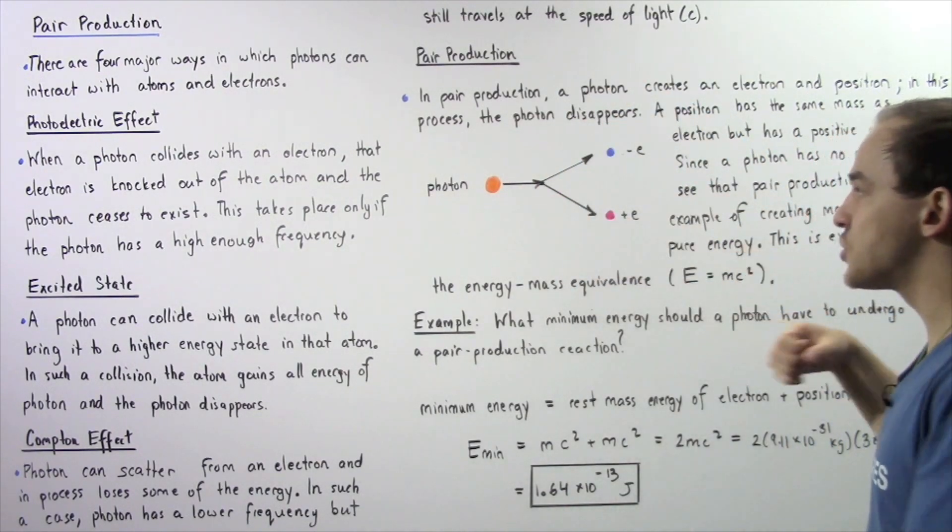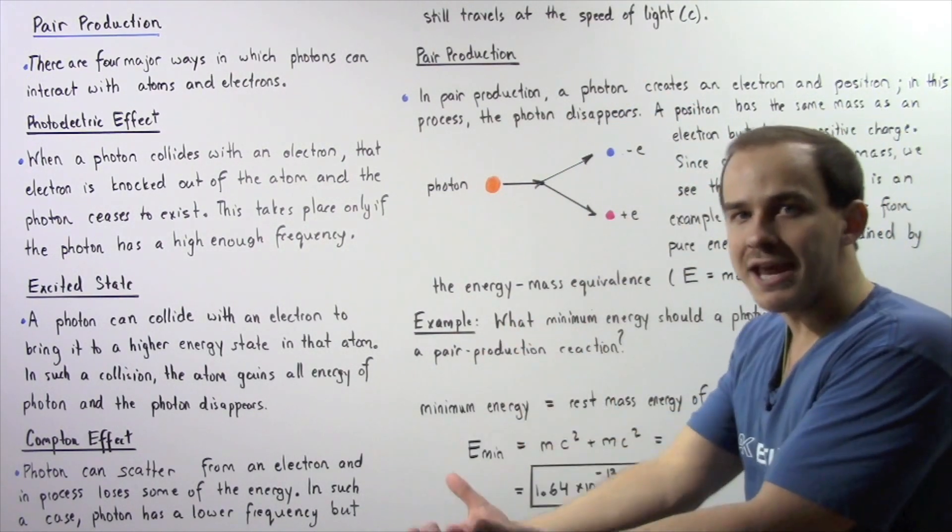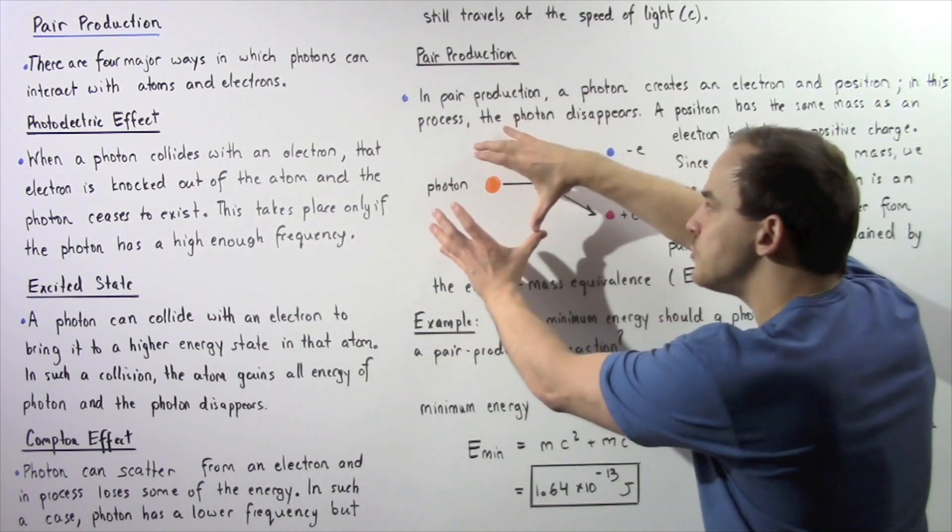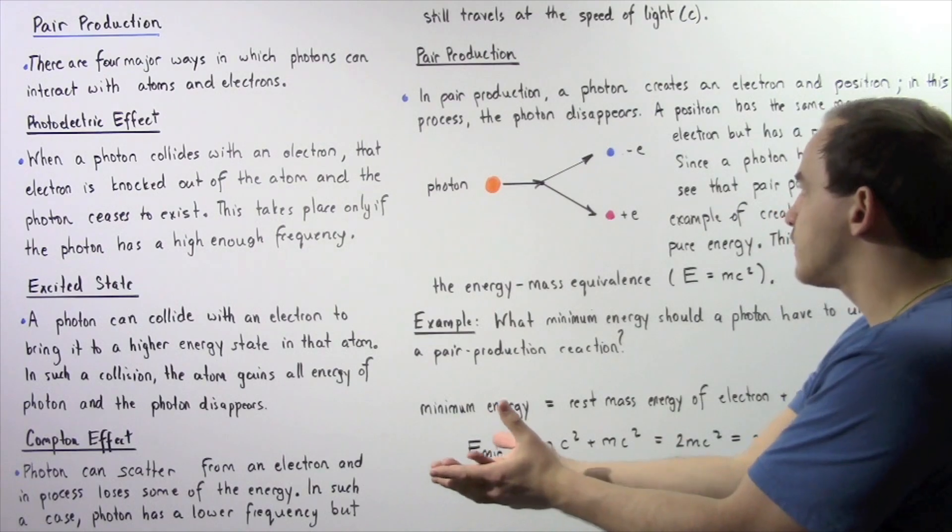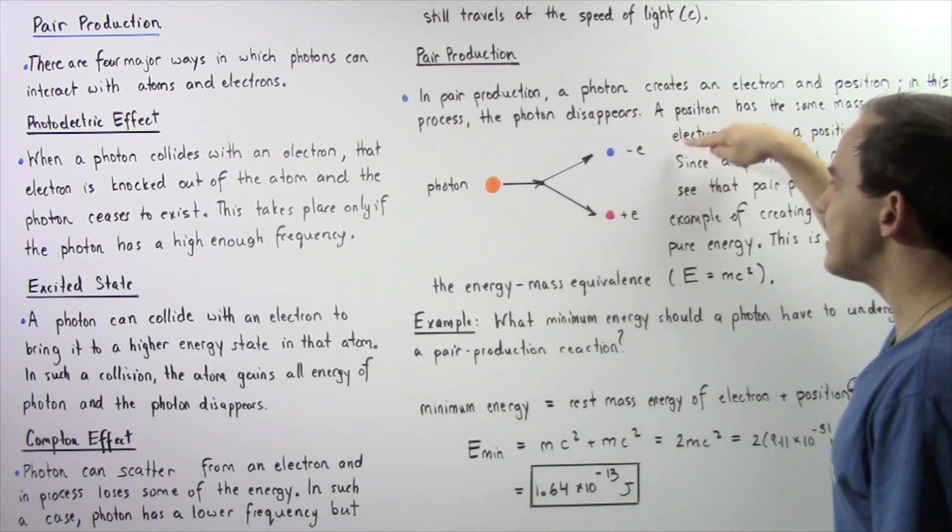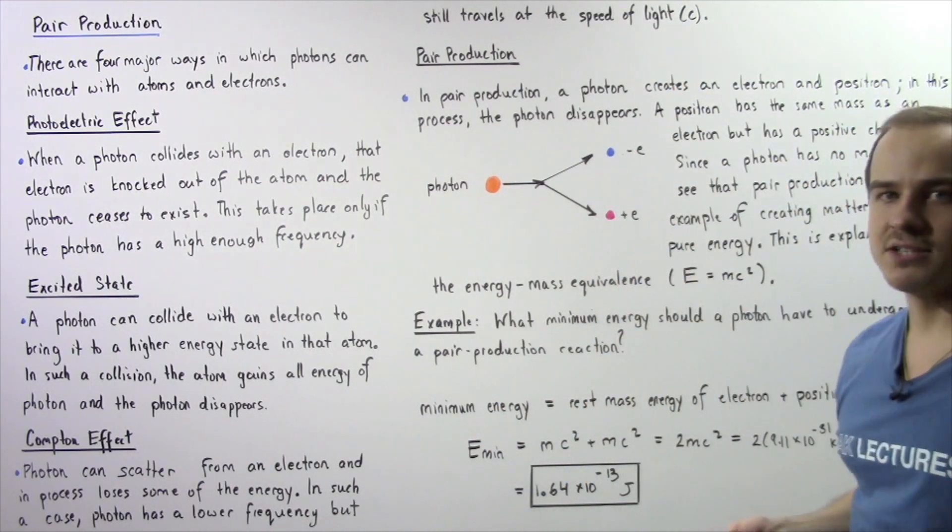Basically, we have mass being converted into energy. And in this case, in the pair production case, we have energy within a photon that is being transformed and converted into mass of our electron and the positron.